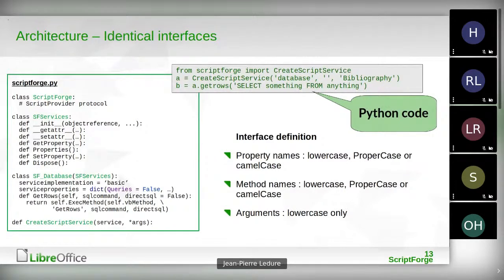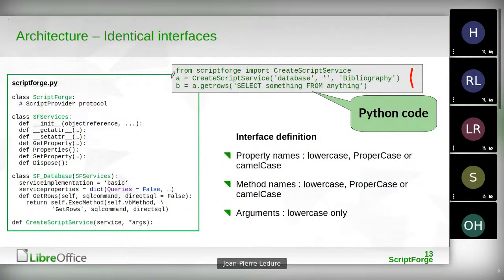Are the interfaces seen from user scripts really identical? For example, Basic is fully case-insensitive — is that managed? In Python you just have to import the CreateScriptService function from a module shipped with LibreOffice called scriptforge.py. We create an instance of the database service and store it in variable A, open the database known as Bibliography, and execute a SELECT statement storing the result as an array or tuple of tuples in B — the rows returned by that SQL statement.